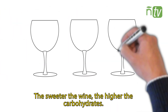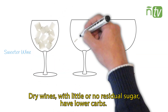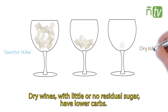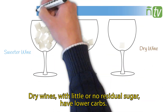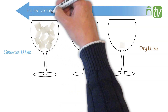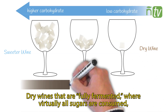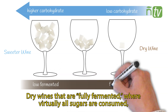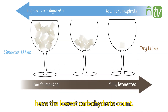The sweeter the wine, the higher the carbohydrates. Dry wines, with little or no residual sugar, have lower carbs. Dry wines that are fully fermented, where virtually all sugars are consumed, have the lowest carbohydrate count.